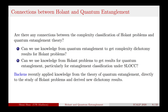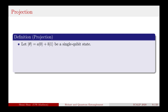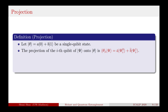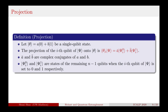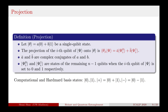Let's roughly describe Backens' results. First, let's define an operation called projection. Let δ be a single-qubit state. The projection of the i-th qubit of an n-qubit state Ψ onto the single-qubit state δ is defined as follows: this gives a state of n−1 qubits, where ā and b̄ are complex conjugates of a and b, and the states Ψ_i^0 and Ψ_i^1 are states of the remaining n−1 qubits when the i-th qubit of Ψ is set to 0 and 1 respectively. We are particularly interested in projections onto four states: the two computational basis states |0⟩ and |1⟩, and the two Hadamard basis states |+⟩ and |−⟩.